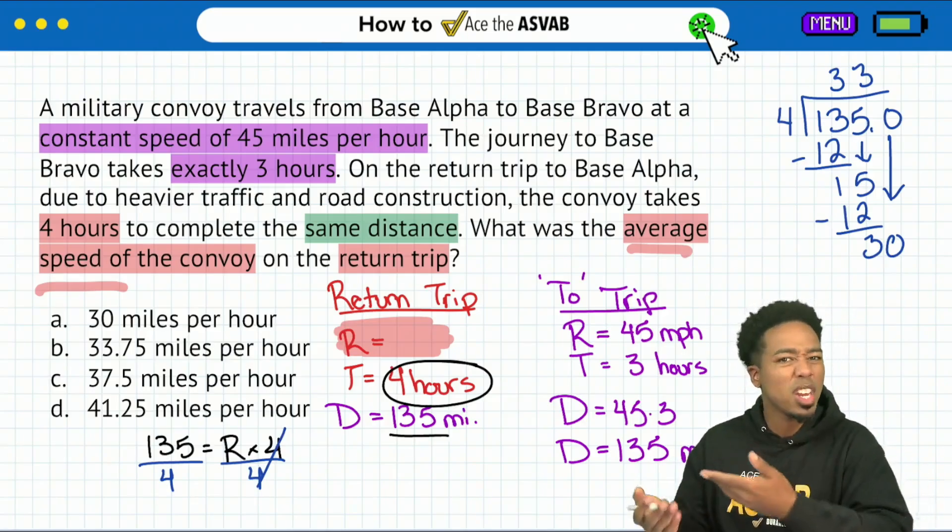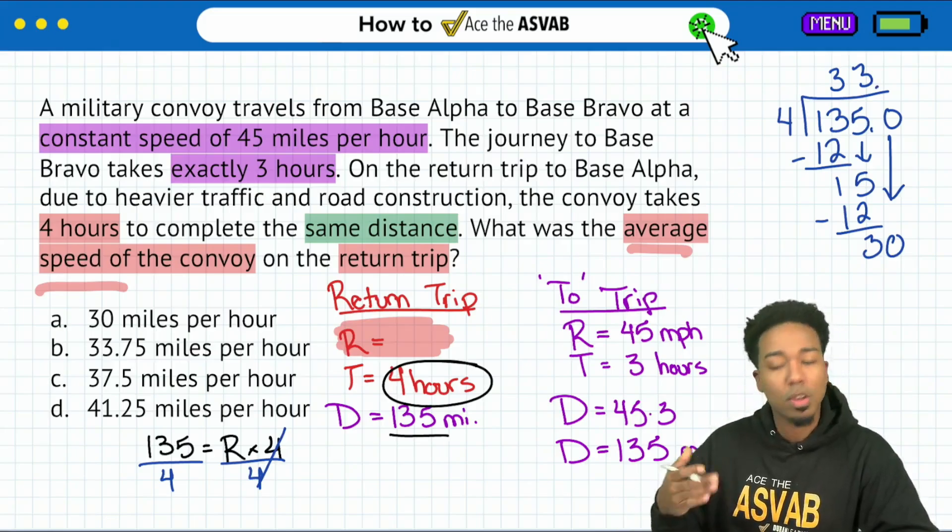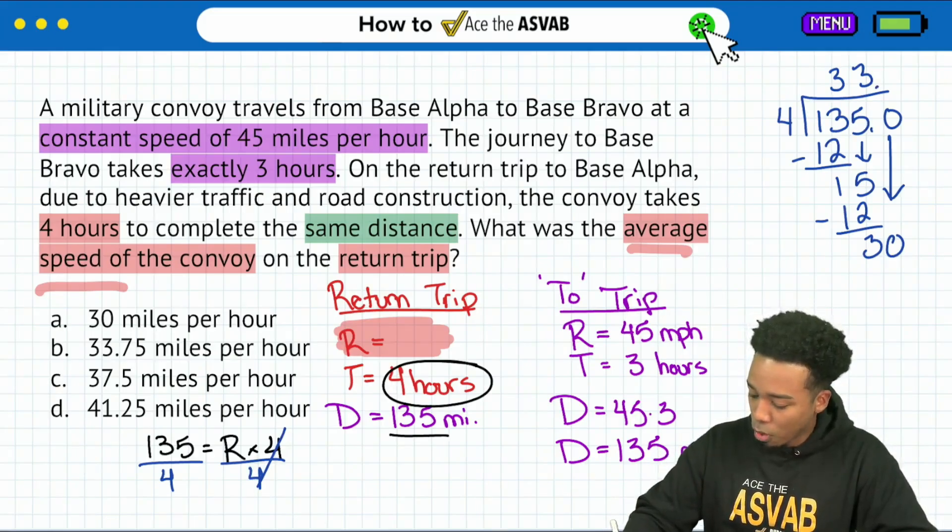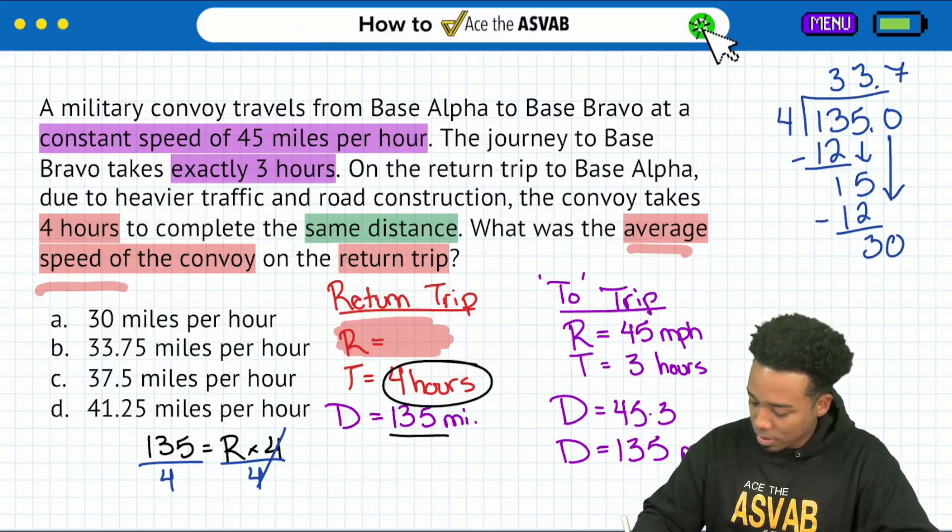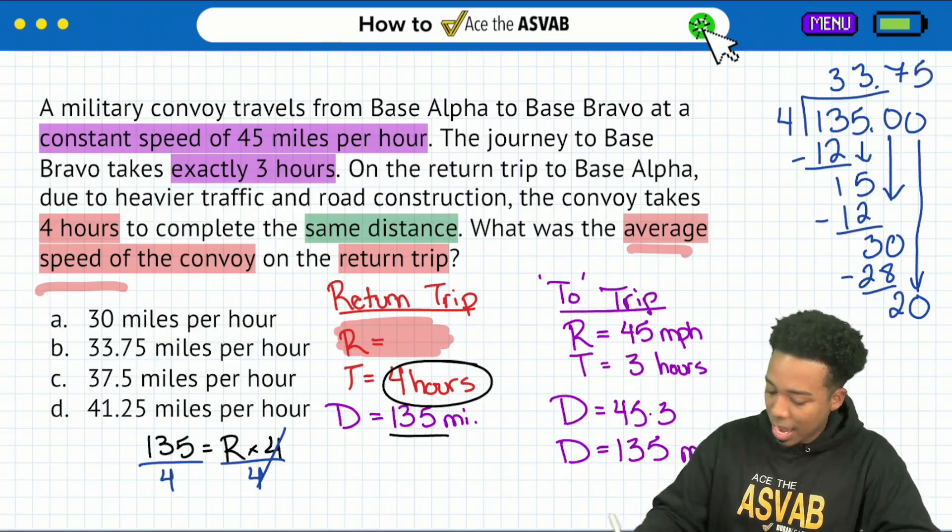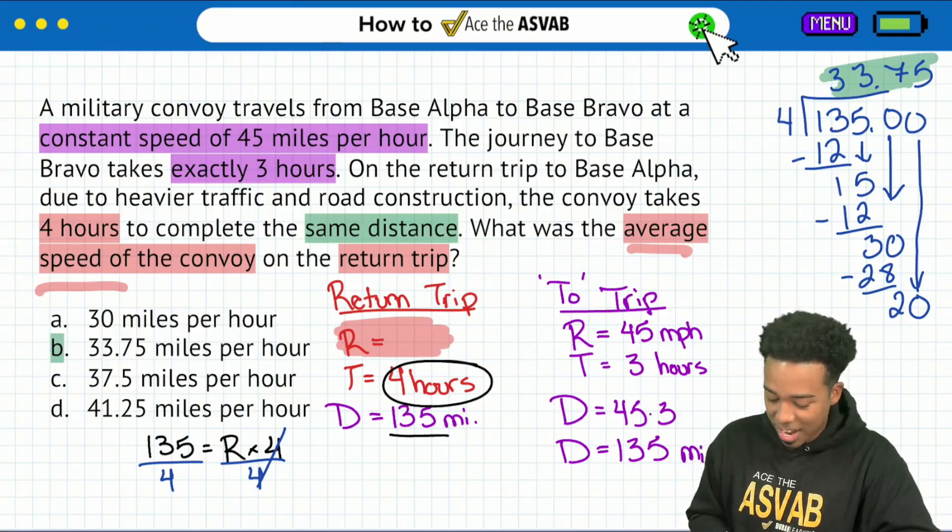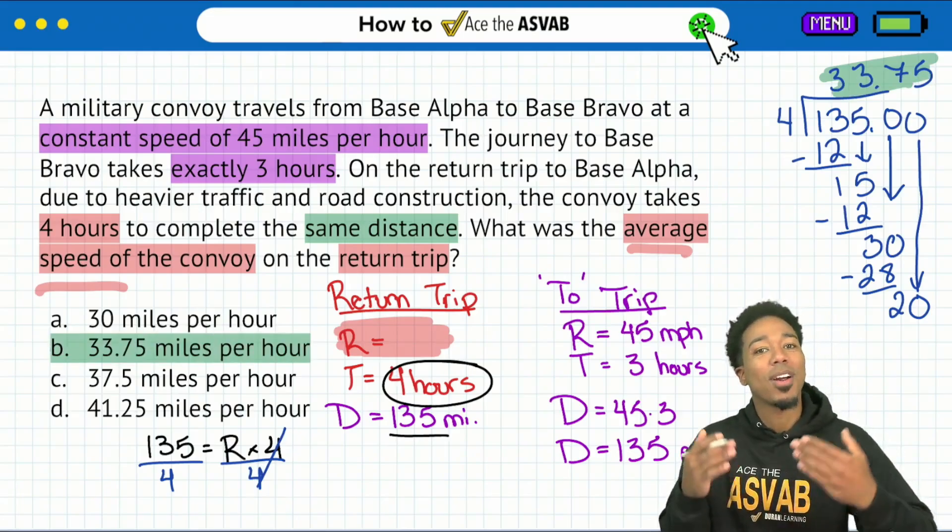But let's go ahead and keep going in case anybody here needs a little bit more help when it comes to working with those decimals. So four goes into 30, that'll be seven times because that's 28. Then we have two left over, another zero, drop it down. Four goes into 20 five times. And that's how we know it'll be 33.75 miles per hour.